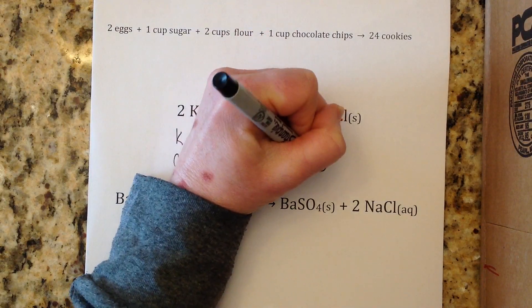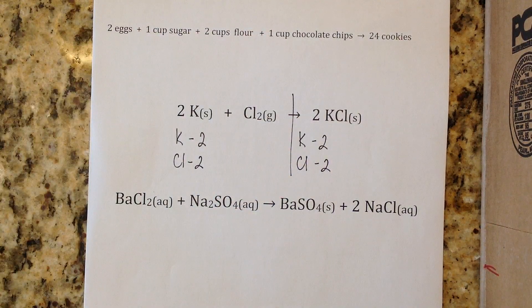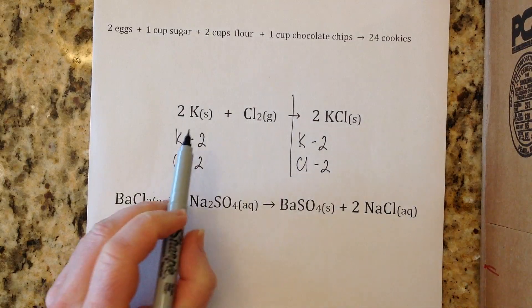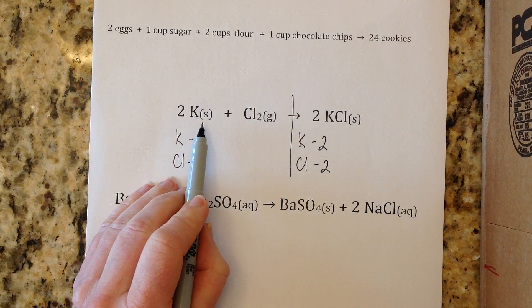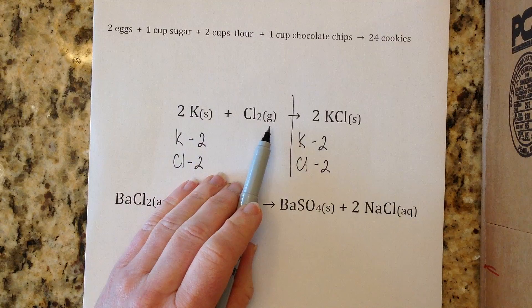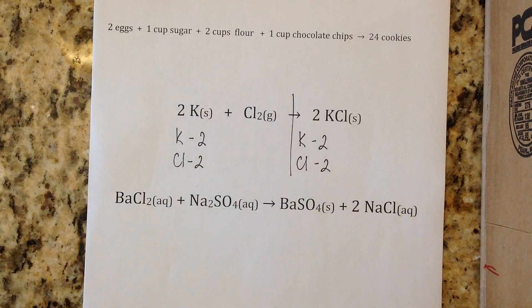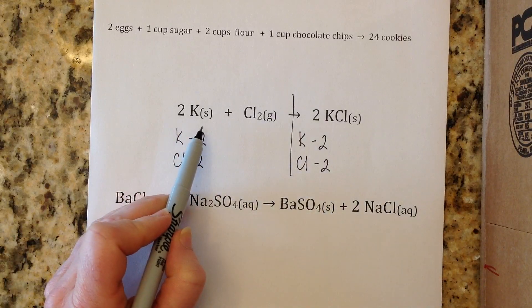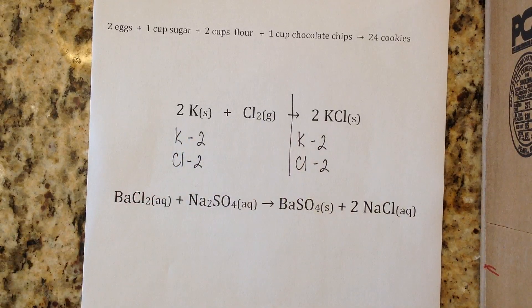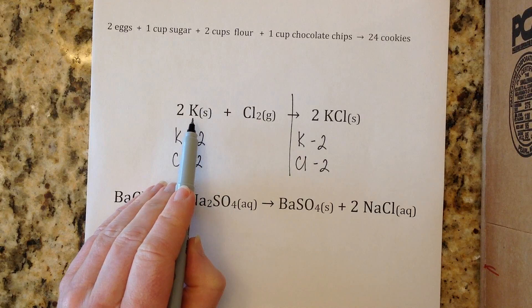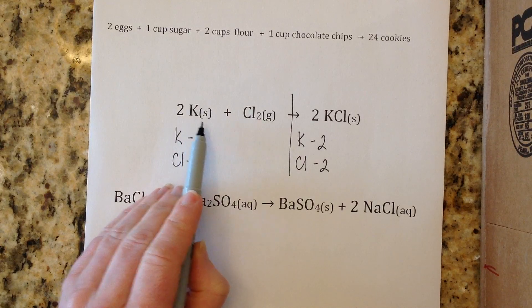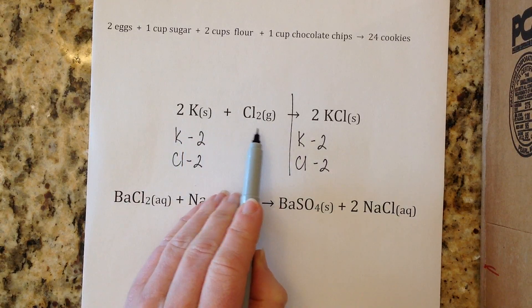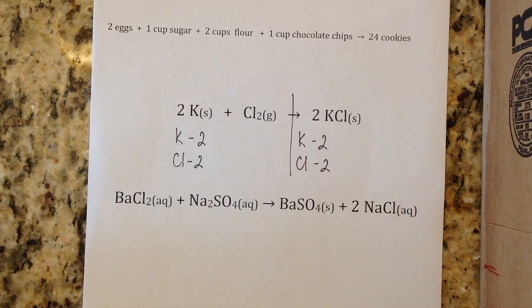Something else that you'll see in this reaction is you'll see some s's, g's, l's, aq's in parentheses after each substance. These are showing you what state they are in at the time. For example, this potassium is in the solid state, this chlorine gas is a gas.